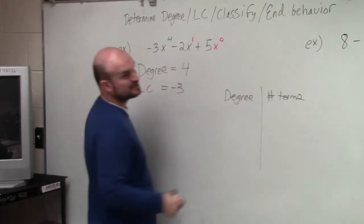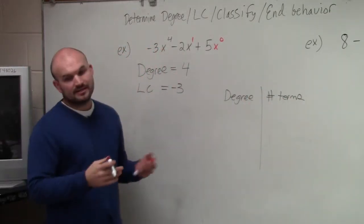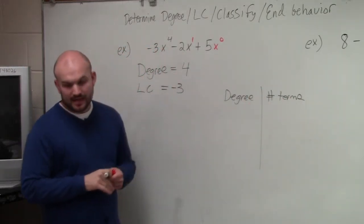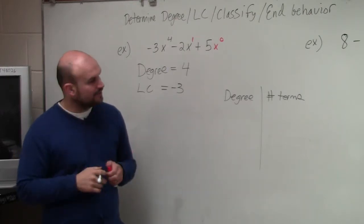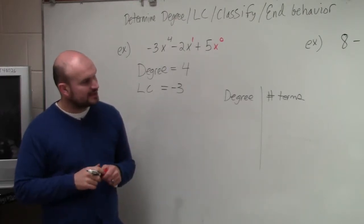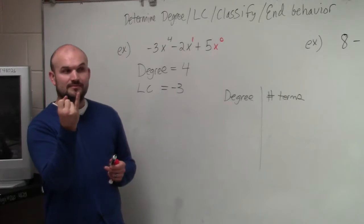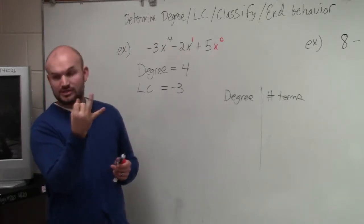You can classify by its degree or classify by the number of terms. So again, this is something that should be in your notes. When classifying by degree, I'm not going to go write these down because they should already be written down. But if not, if you weren't here, you can go get them. But degree, if it had a degree of 1, it's a linear. Degree of 2, it's quadratic.